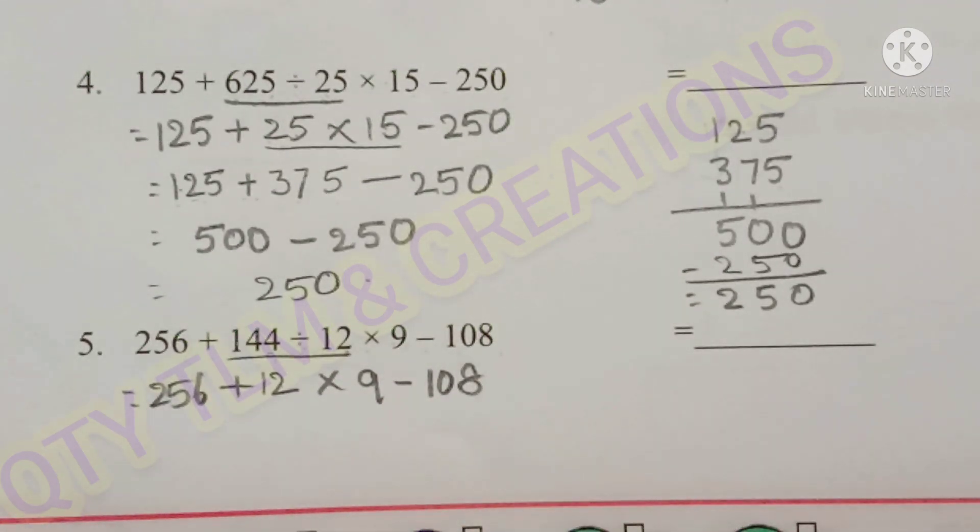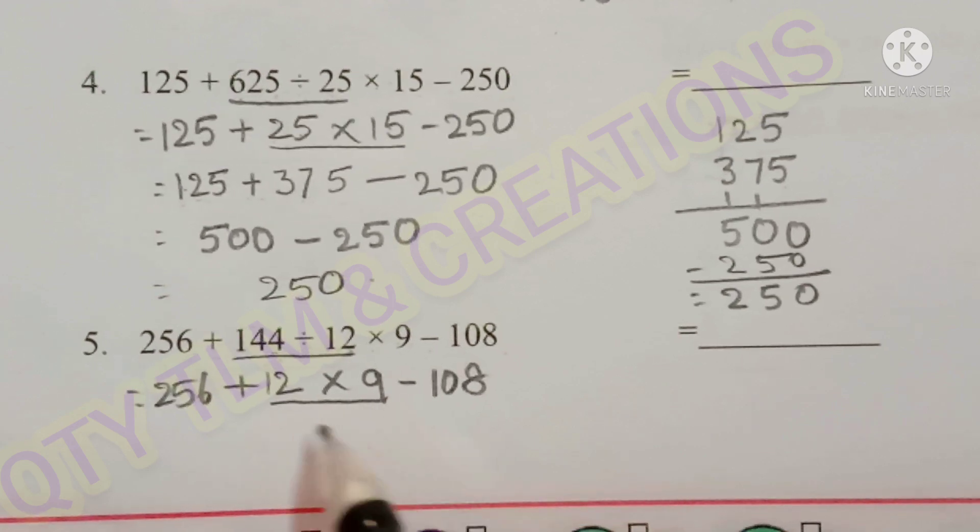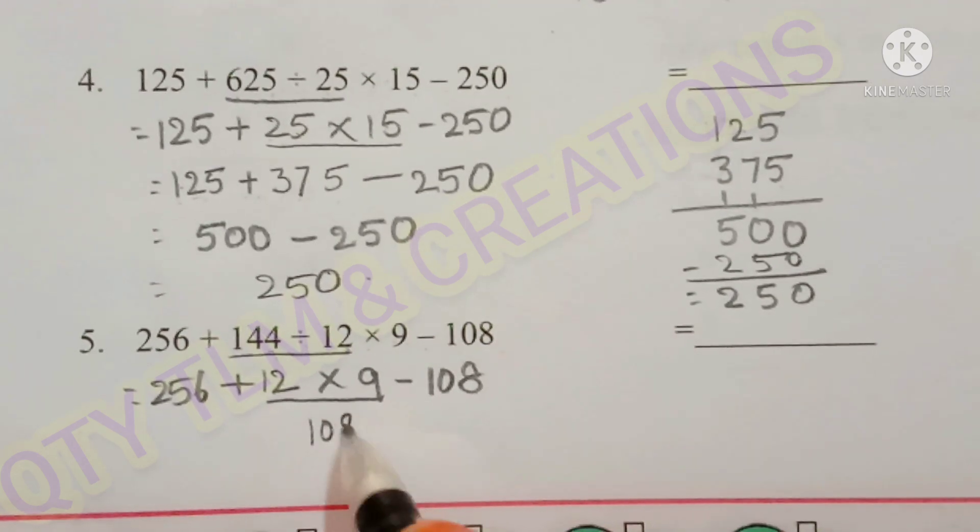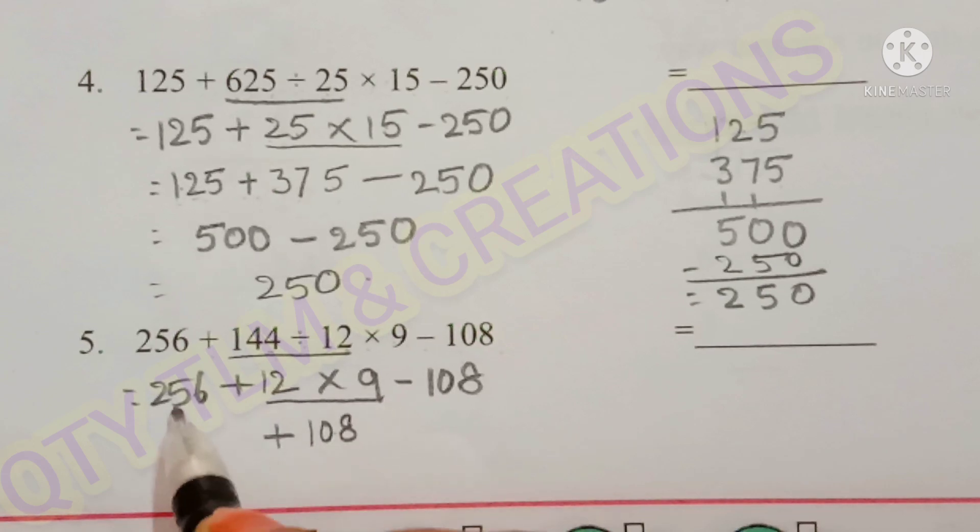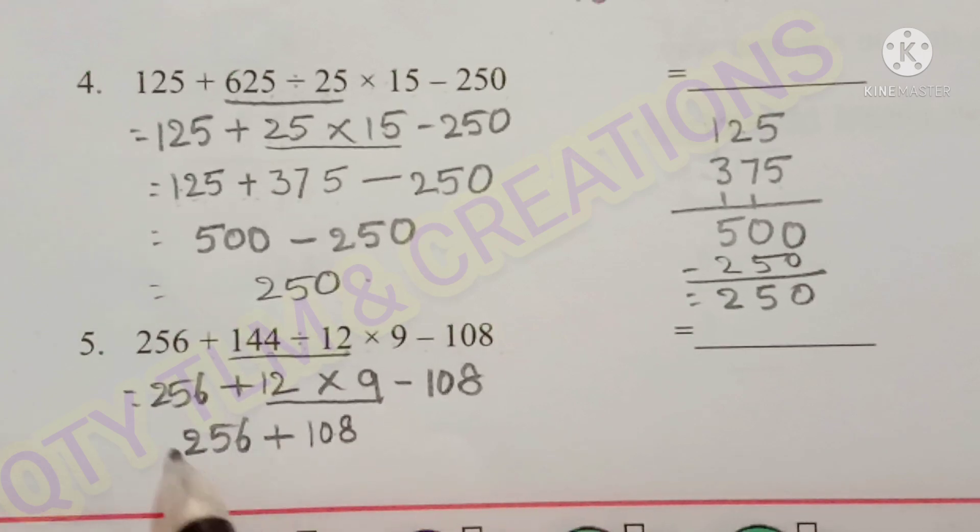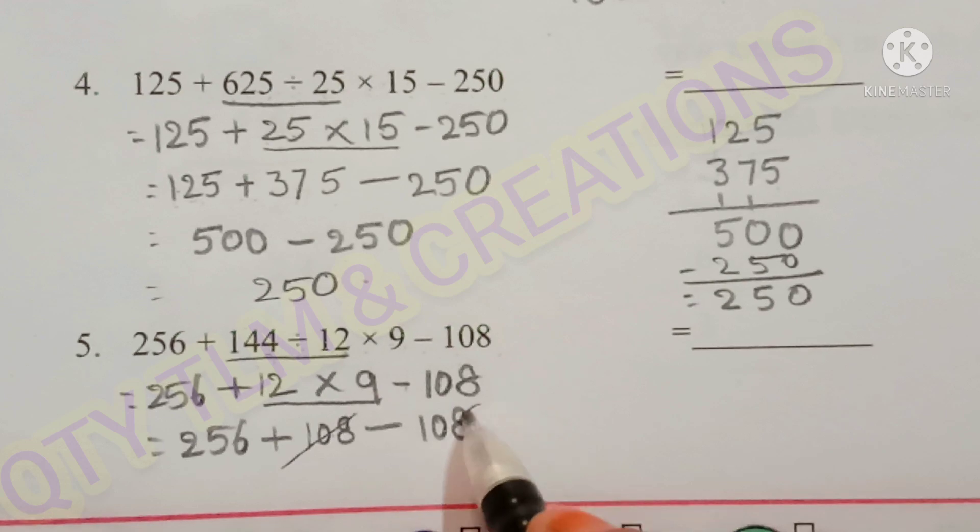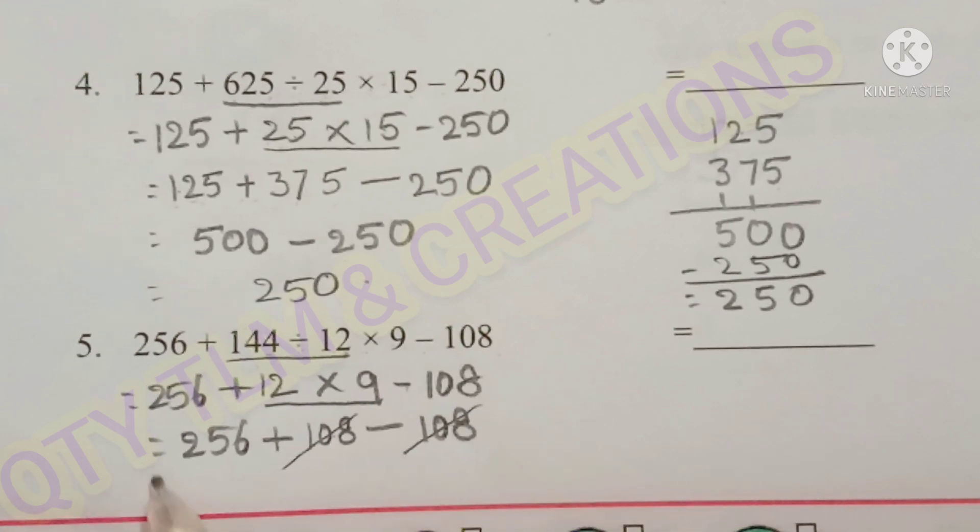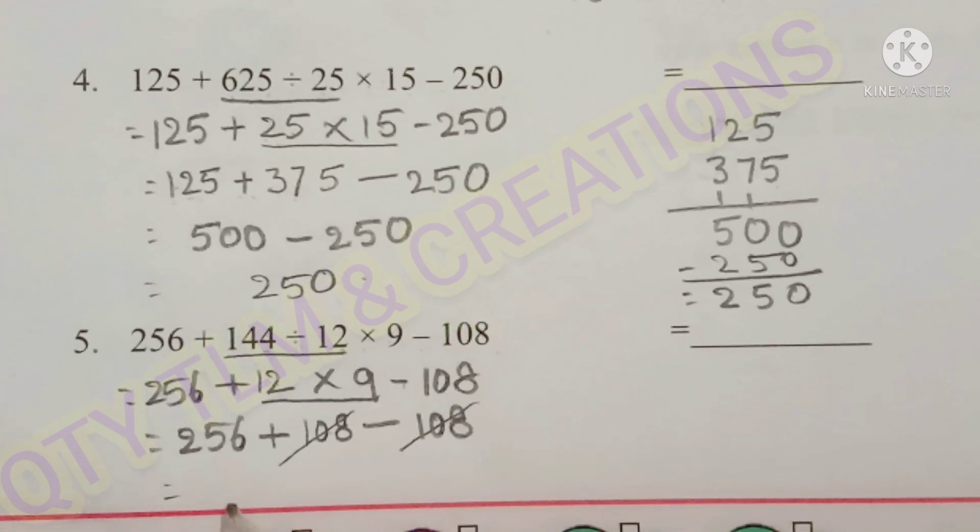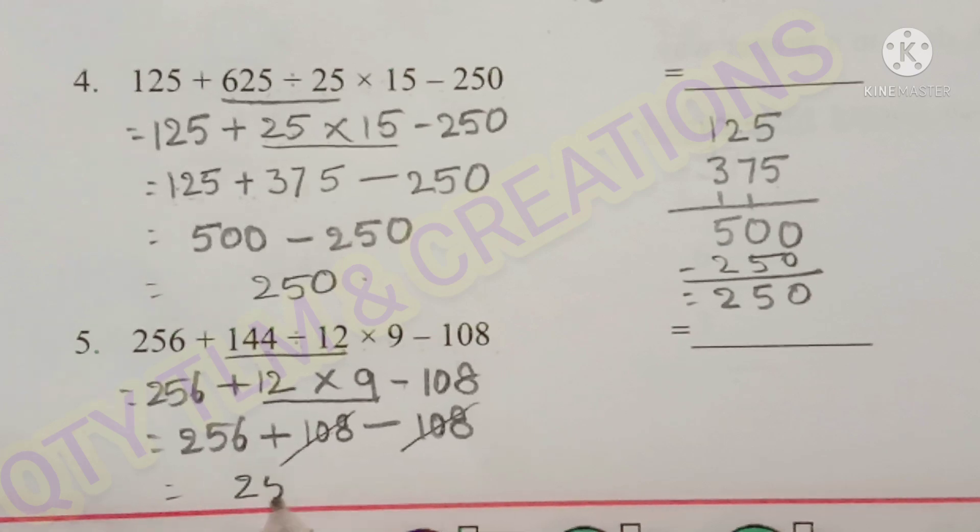Next operation is multiplication. 12 times 9 is 108 plus 108. And 256 minus 108 minus 108. Here plus 108 and minus 108 cancel. Remaining 256. So the answer is 256.